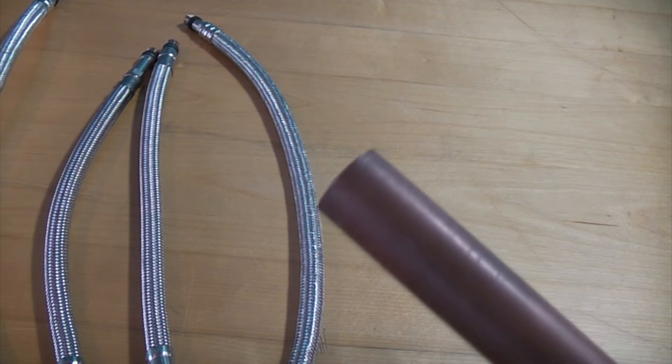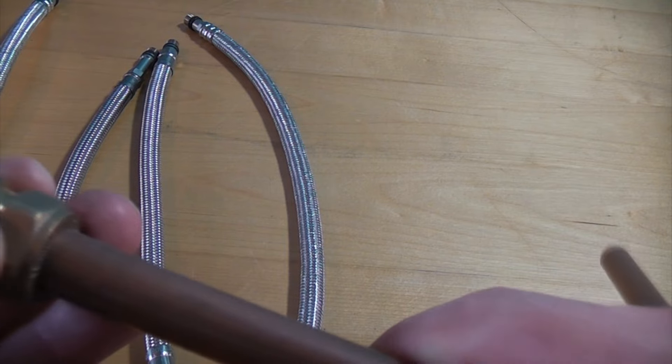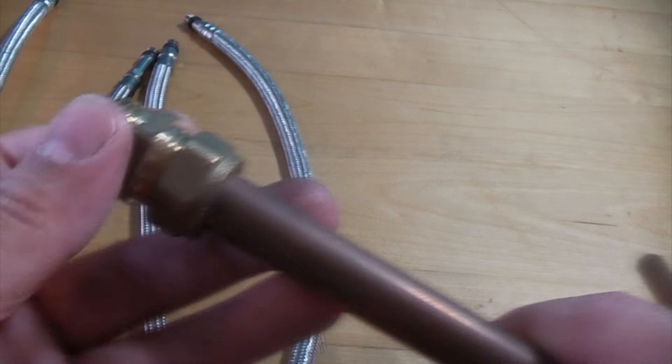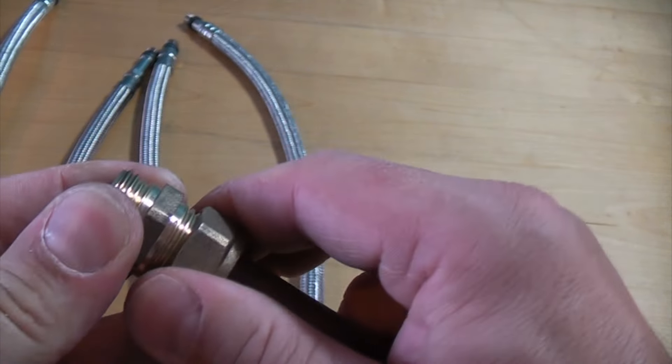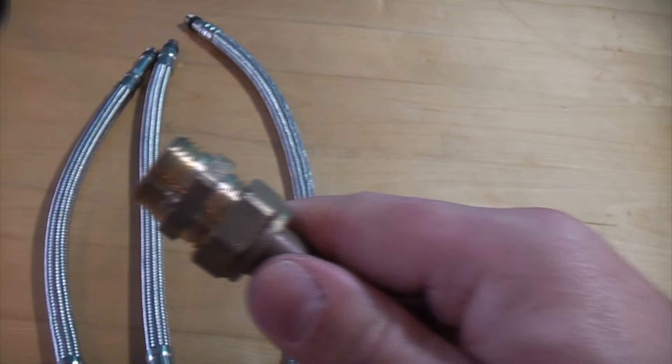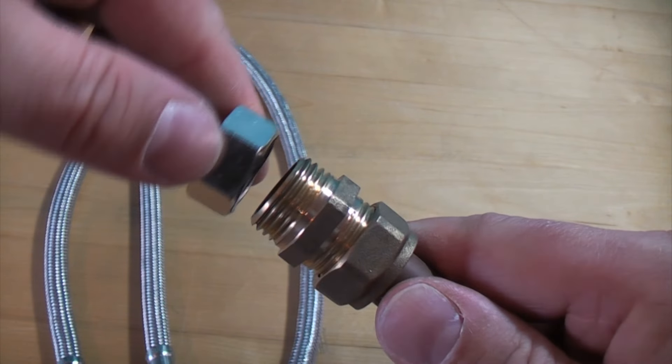So if that's the pipe at your sink, you'd fit a compression fitting onto there and obviously tighten it up so that it can't leak, and then you'd screw your flexible tail onto that end.